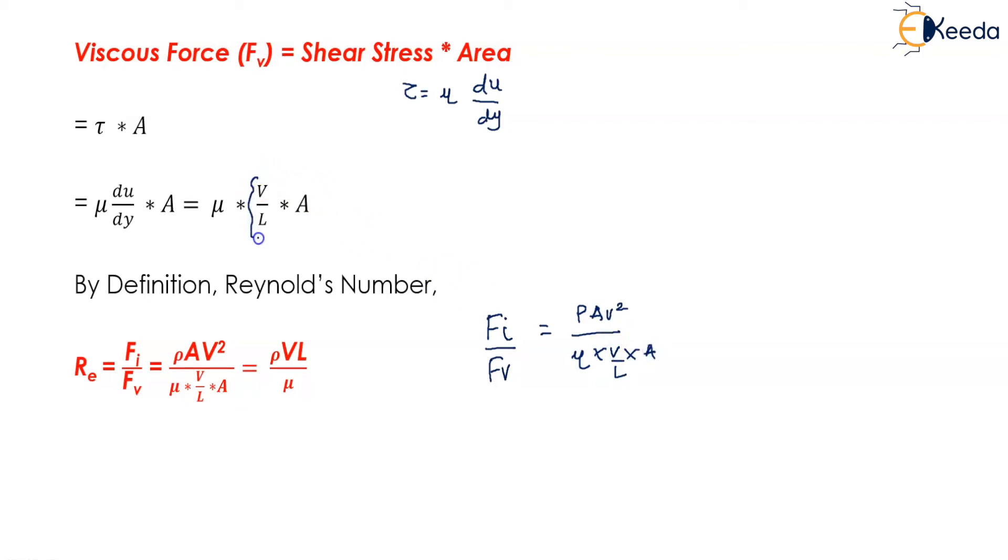Now this term v upon L is written because du is nothing but the term related to velocity and dy is nothing but the distance between two layers. So it is denoted by length.